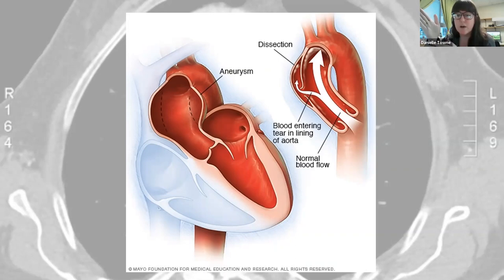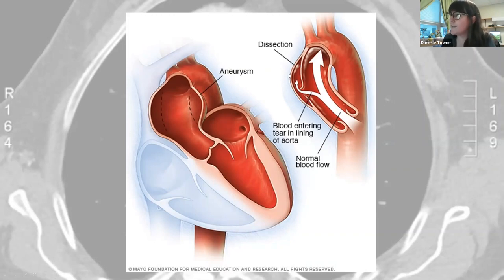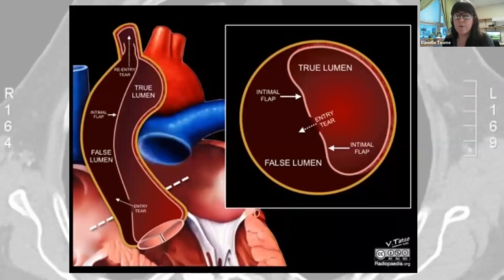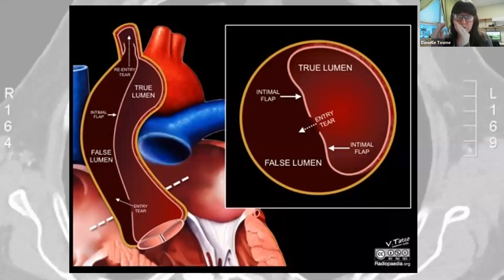Sometimes blood going into the false lumen is at such high pressure that it causes secondary tears, which can allow some blood to reenter back into the true lumen. So you've got that bulging and weakening of the wall — that's your aneurysm — and then a tiny tear occurs, blood flows into that torn area and rips the layers apart. With a weakened wall that's already stretched, now torn, and now one layer less than before, you have to be very concerned about how long that vessel can hold before you have a rupture. That's what we want to avoid.